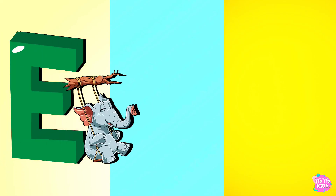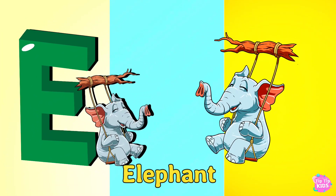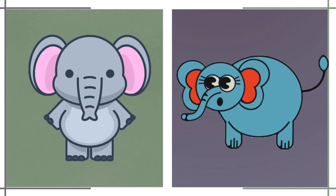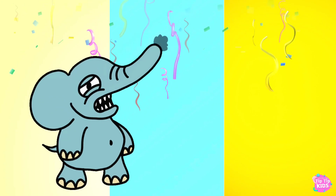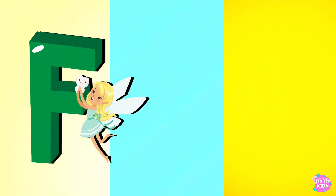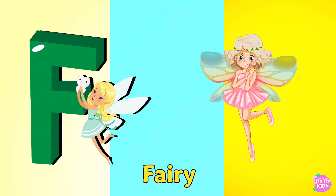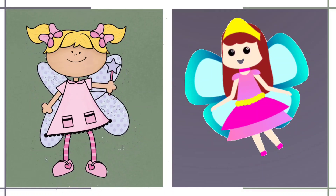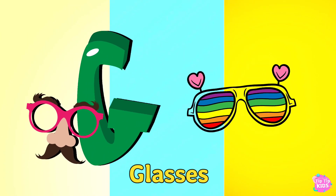E is for Elephant. E, Elephant, E. Elephant. F is for Fairy. Fairy, Fairy. F, Fairy.